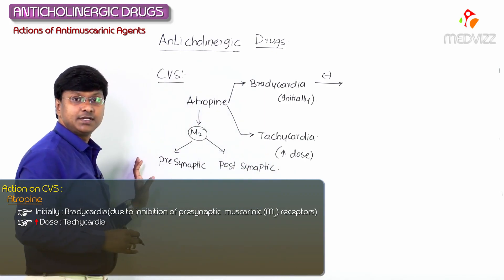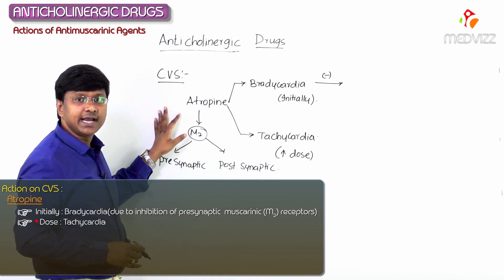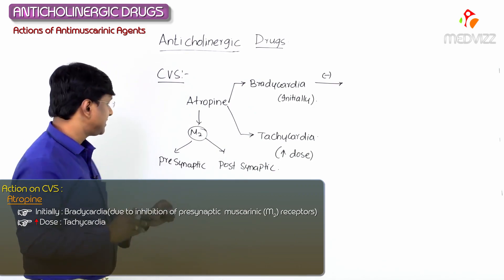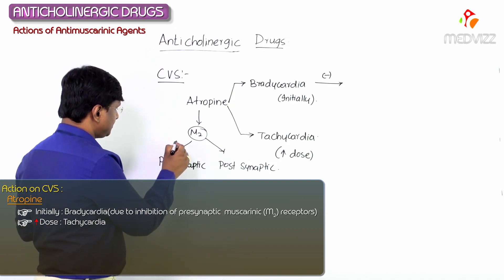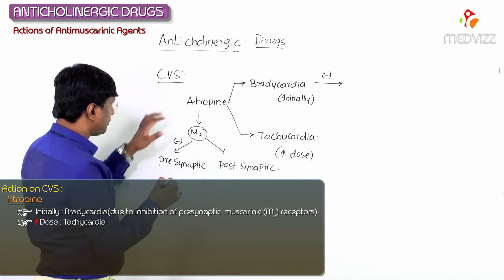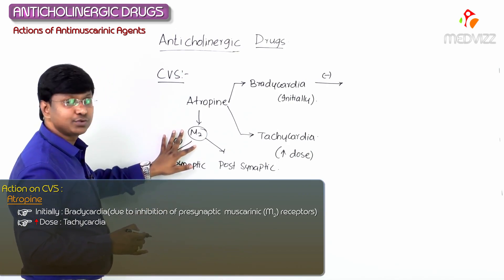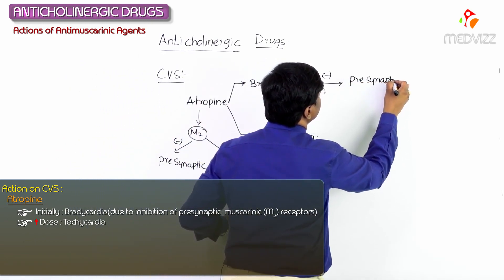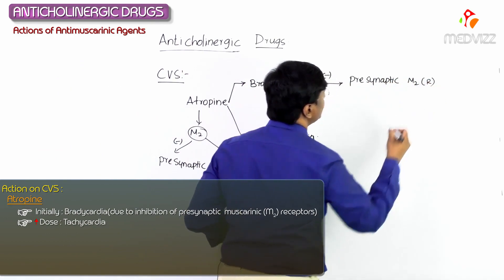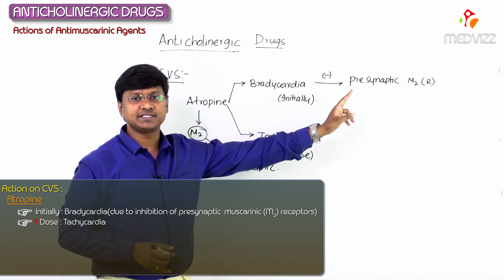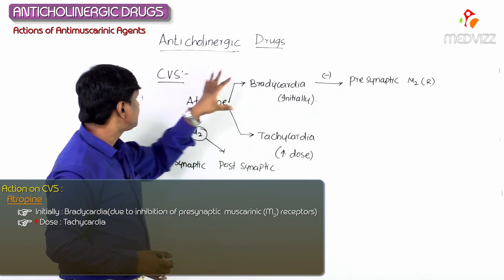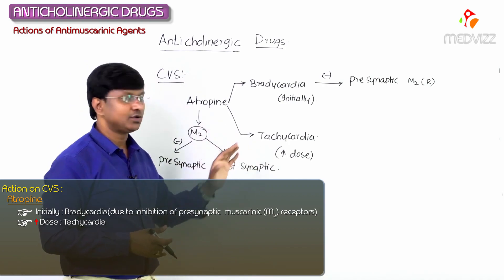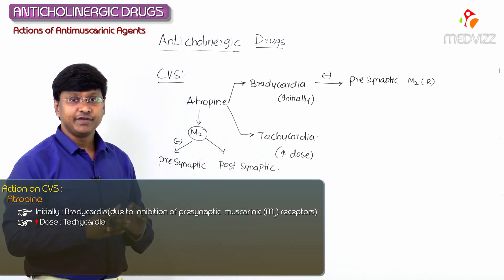Atropine causes bradycardia by inhibiting the presynaptic M2 receptors. So atropine will inhibit the presynaptic M2 receptors, and by causing this inhibition of the presynaptic muscarinic receptors, atropine will cause bradycardia.